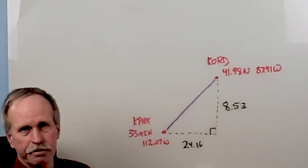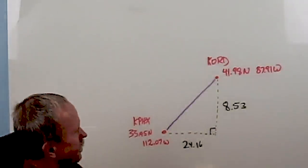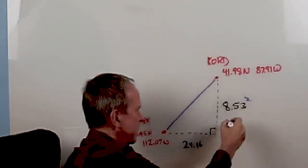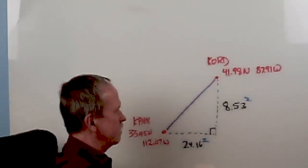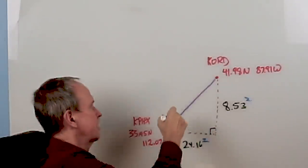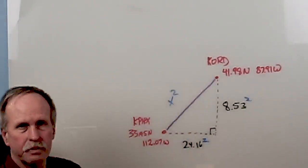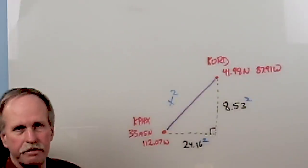Now on a flat surface, using the Pythagorean Theorem, all we would have to do is square that number and square that number, add them together, and we would get that number squared, which is the direct distance between Chicago and Phoenix.